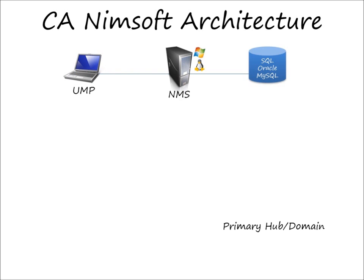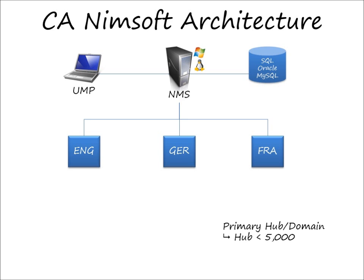UMP, or the Unified Management Portal, is the end user reporting tool that shows the performance data to the end user. Reporting up to the primary hub are the data center hubs. For example, in a fictitious environment with three data centers — one in England, one in Germany, and one in France — each data center would get at least one hub. Hubs can handle up to 5,000 servers. England's data center can scale horizontally by adding more hubs. This could also be looked at as a multi-tenant environment with one customer in each location.